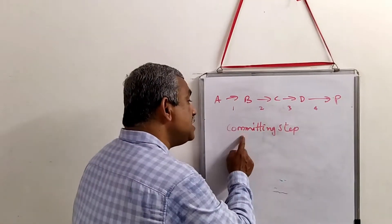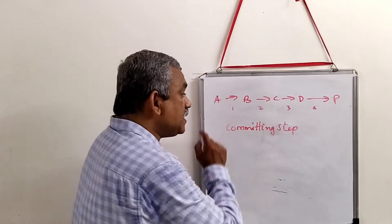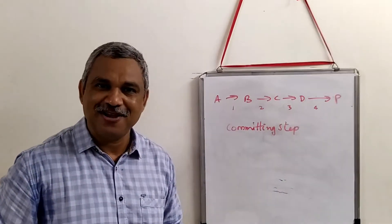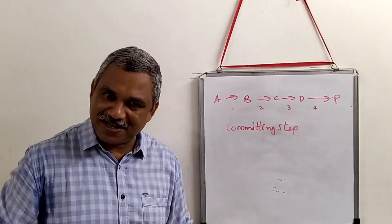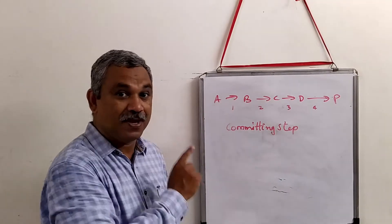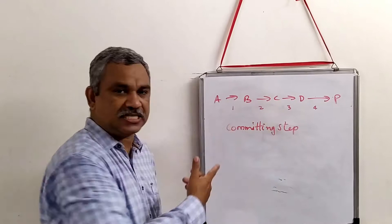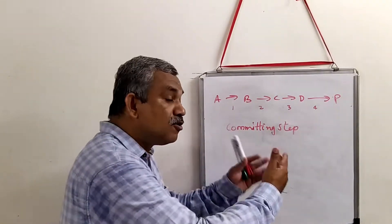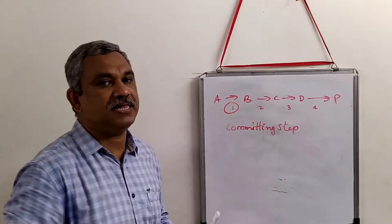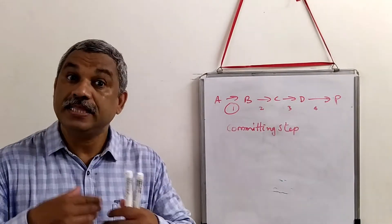Generally, the committing step is one of the first steps in the pathway. If the committing step is early, there will be no unwanted synthesis of intermediates and no unwanted wastage of energy. If the committing step were at step three, we would unnecessarily create intermediates B and C, requiring several enzymes to be synthesized. So the committing step is normally one of the first steps.